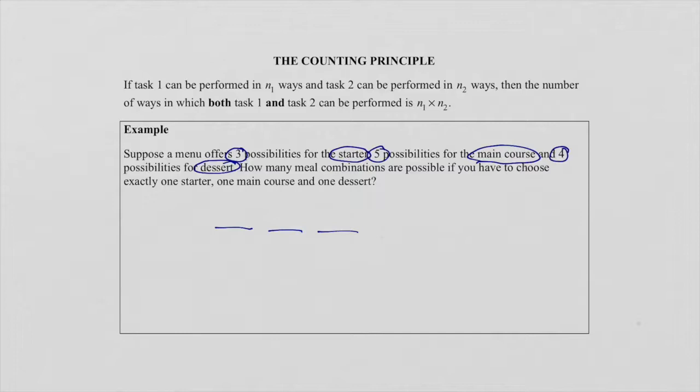Task number one is to select a starter. As you can see, three possibilities for a starter. Task two is to select a main course, and there are five possibilities for a main course. And task three is to select a dessert. Remember, only one starter, one main course, and one dessert are supposed to be selected. So for desserts, four possibilities.